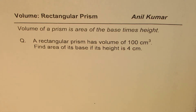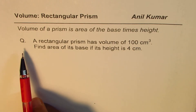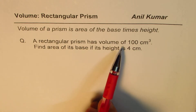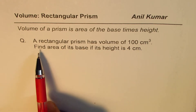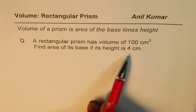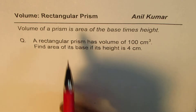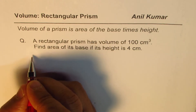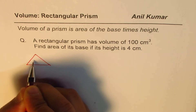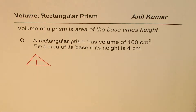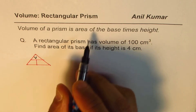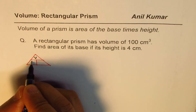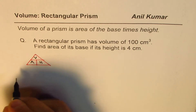I'm Adil Kumar. We are exploring volume of rectangular prisms. What we know is that volume of a prism is area of base times height. Based on this, here is a question for you. Let's begin with the given relation — volume of prism is area of the base times height. I make a triangle to represent this relation and to remember it. The triangle is: volume is area of base times height, where area of base is A and height is H.